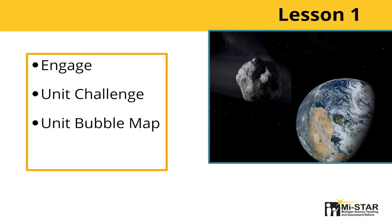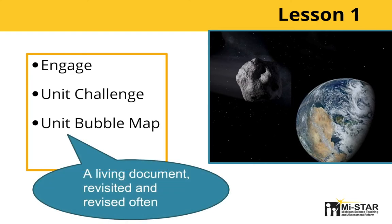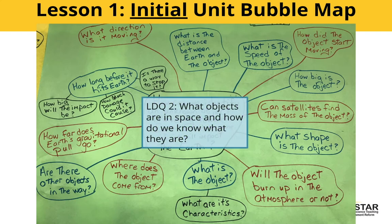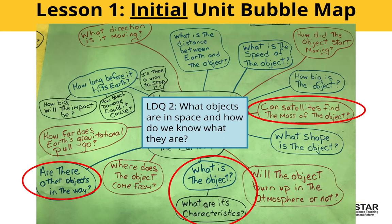For the first lesson, students are introduced to the challenge and then work to develop the first iteration of the unit bubble map, which is revisited and updated during the unit as students achieve greater understanding. This image of an initial unit bubble map came from our pilot testing. The questions in it give the teacher the chance to see some initial student thinking, as well as to determine how to move smoothly to the first middle lesson. The lesson discovery question is: what objects are in space and how do we know what they are? Can you identify some similar questions? Pause the video if you need to.